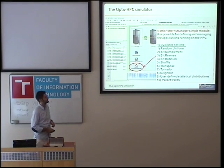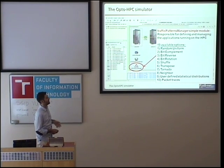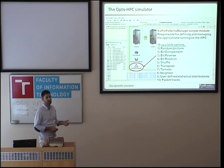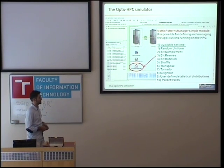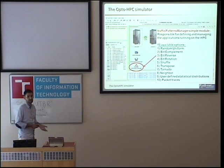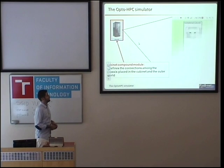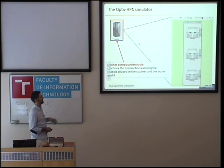Here we have the traffic patterns manager simple module, which is responsible for defining and managing the applications that are supposed to run on the HPC. Currently, we have ten available options. The first eight are synthetic traffic patterns well known from the literature. We also offer the option to use user-defined statistical distributions, and we can also support custom packet traces that can be collected from real machines. Going further, you can see the cabinet compound module, which defines the connections among the chassis placed in the cabinet and the outer network.